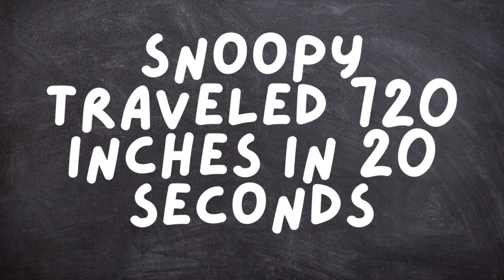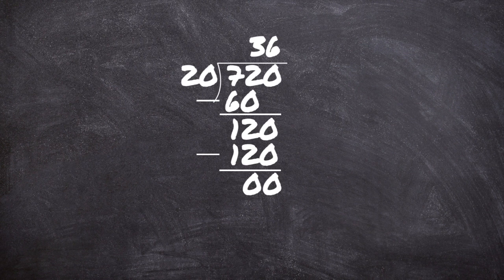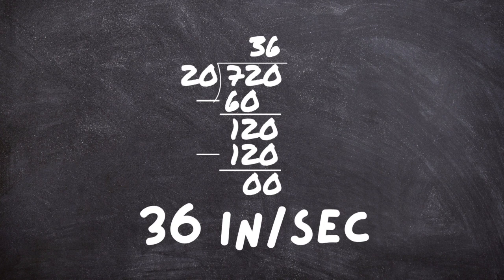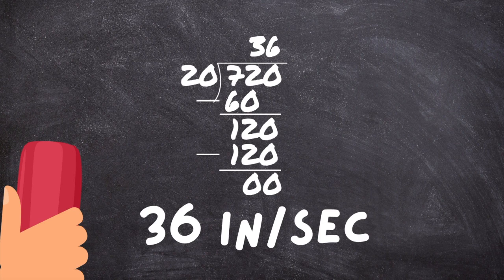Hit pause and see if you can figure it out, and then come back and check your answer. Did you divide 720 by 20? If you did, then you should have gotten a speed of 36 inches per second. That was his fastest time yet.